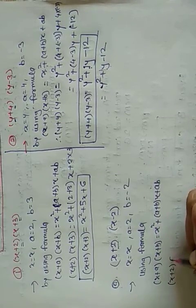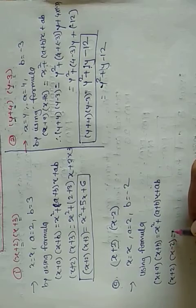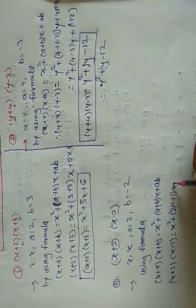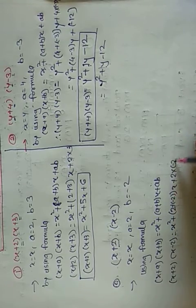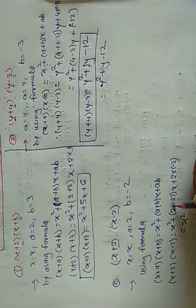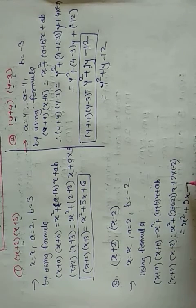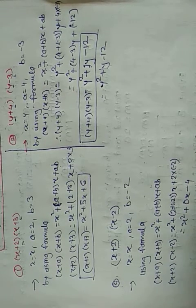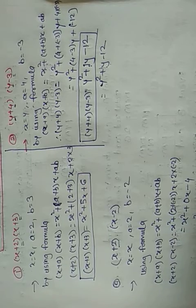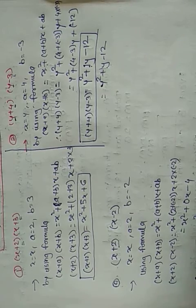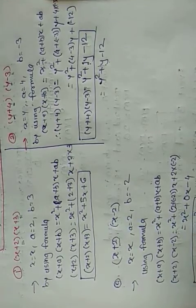So, (x+2)(x-2) = x² + (2 + (-2))x + 2×(-2) = x² + 0x + (-4) = x² - 4, because 0 times x is 0. So (x+2)(x-2) = x² - 4.